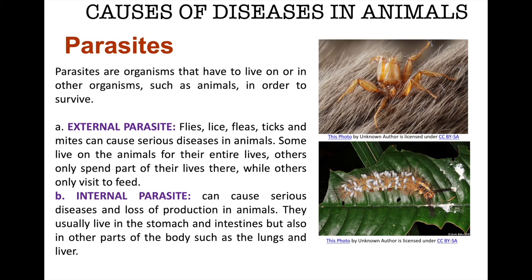Another type is internal parasites. They can cause serious diseases and loss of production in animals. This could include roundworms, flukes, and tapeworms. They usually live in the stomach and intestines but also in other parts of the body such as the lungs and the liver.